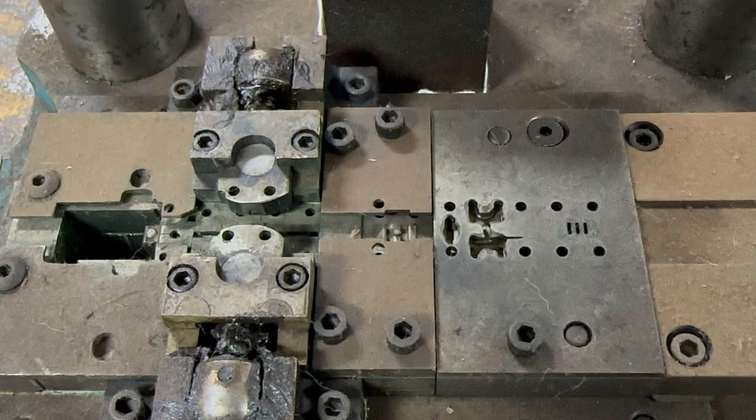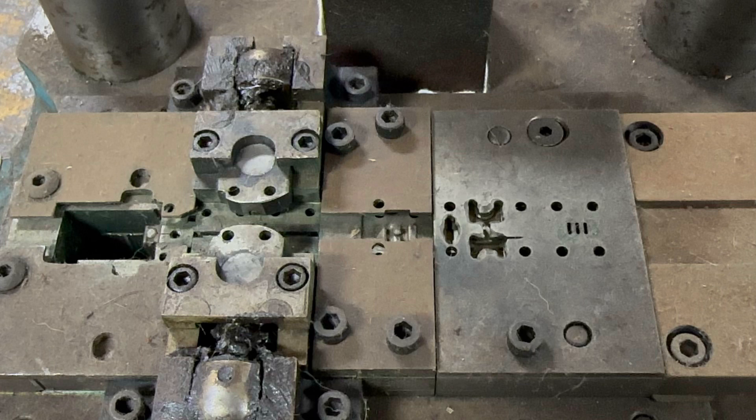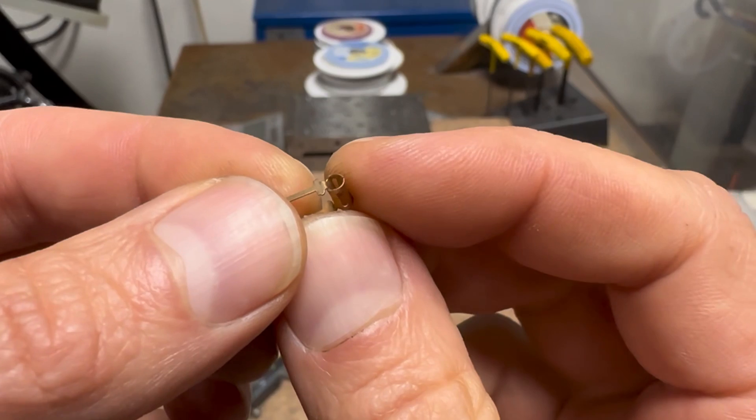This is a progressive die, which means it has multiple stations that each perform a unique operation to produce a finished part. This is the finished part that this die produces.